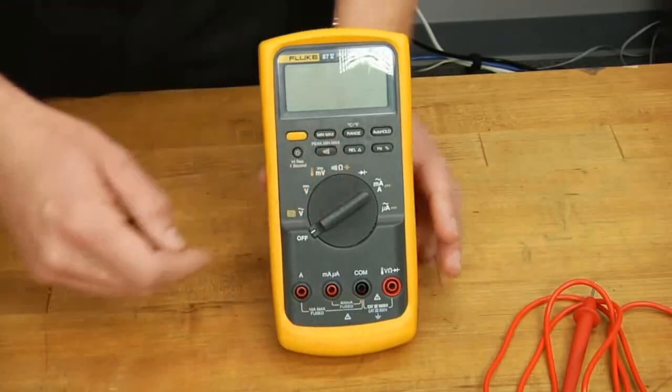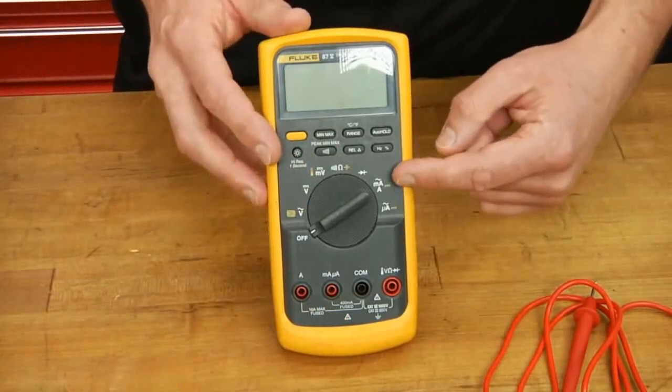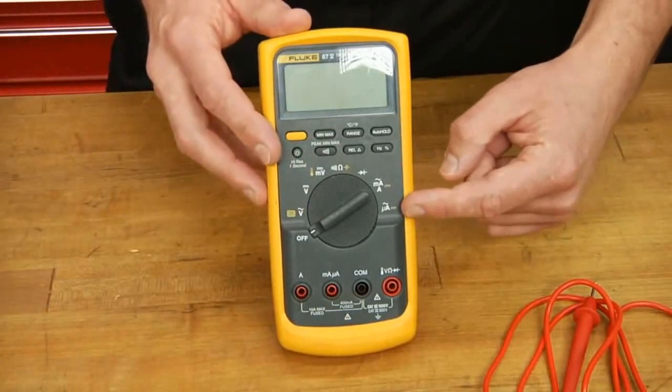The rotary dial, the positions you'll be using are here, the milliamp amp setting and the microamp setting.